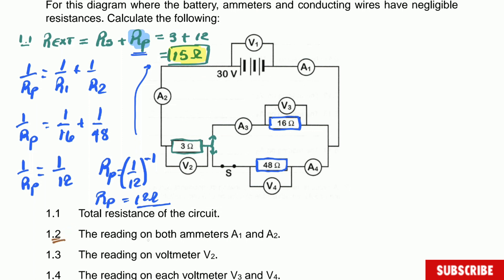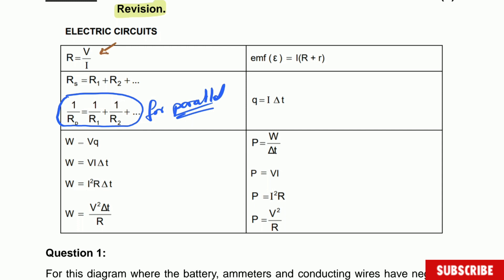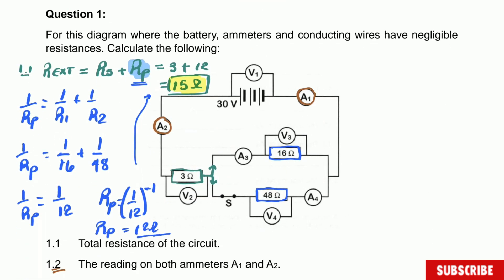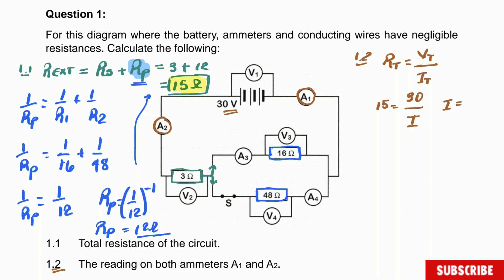Question 1.2: calculate the reading on both ammeters A1 and A2. A1 is right here and A2 is here — both are reading the total current of the circuit. Using the formula for the external circuit: R_total = V_total / I_total, where R_total is 15 ohms and V_total is 30 volts from the battery, which equals A1 as well as A2.